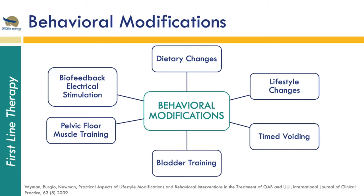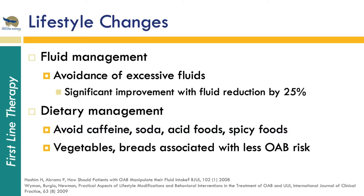If a patient wishes to pursue treatment, it's recommended to start with first-line behavioral modifications: lifestyle and dietary changes, practicing good bladder habits such as timed voiding, as well as pelvic floor muscle therapy with or without biofeedback. Lifestyle changes include fluid management — primarily avoidance of excessive fluids in the evening. Studies have shown significant improvement with fluid reduction of just 20-25 percent. Dietary management also helps; bladder irritants include caffeine, alcohol, carbonated drinks, acidic foods, and spicy foods.